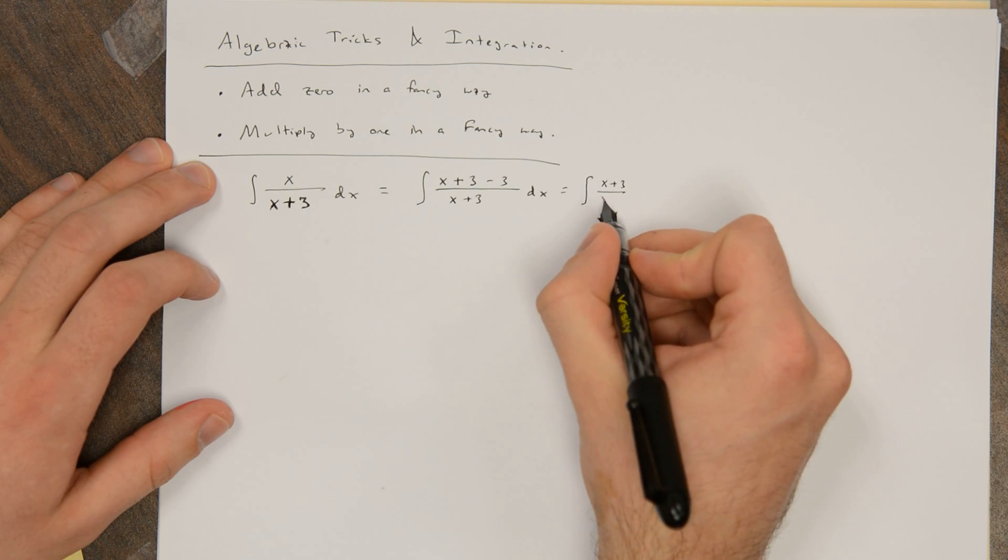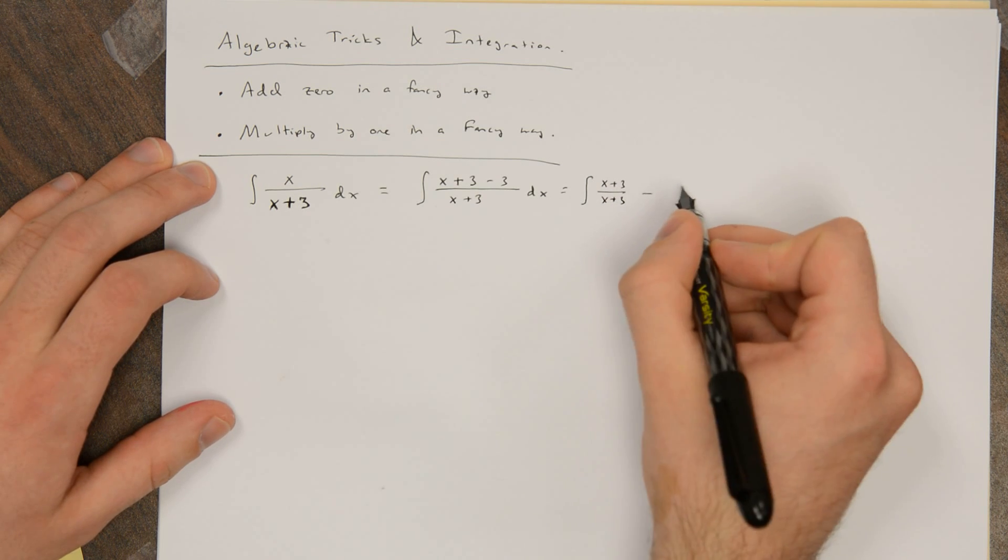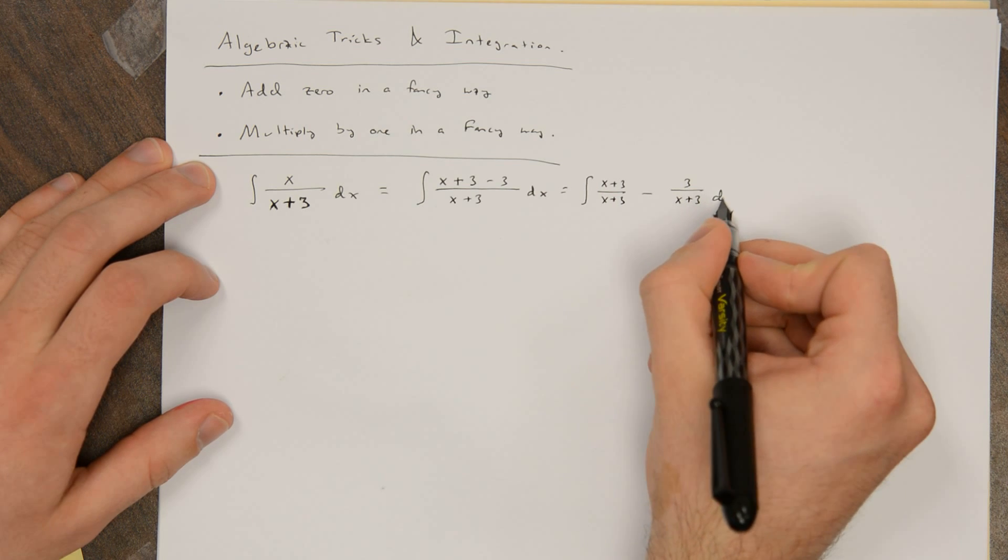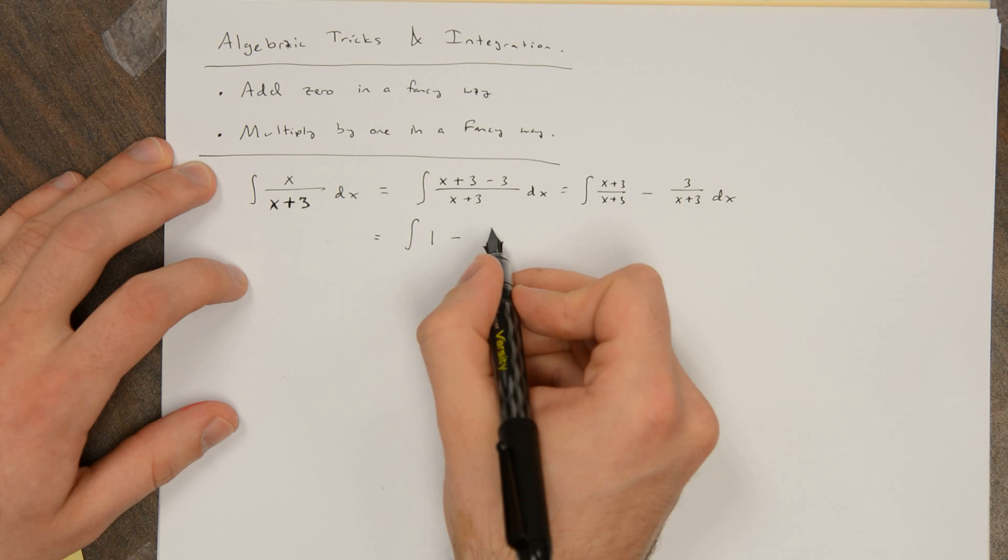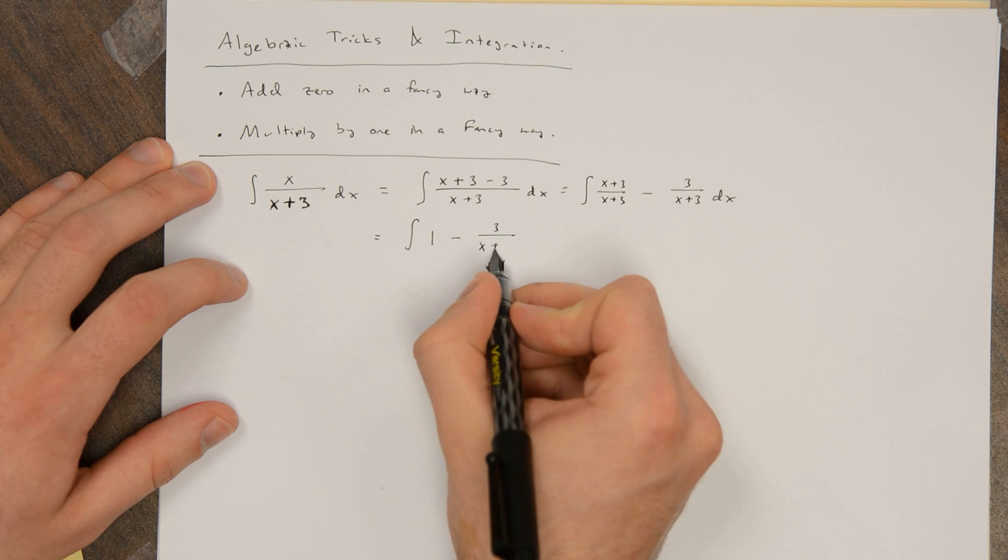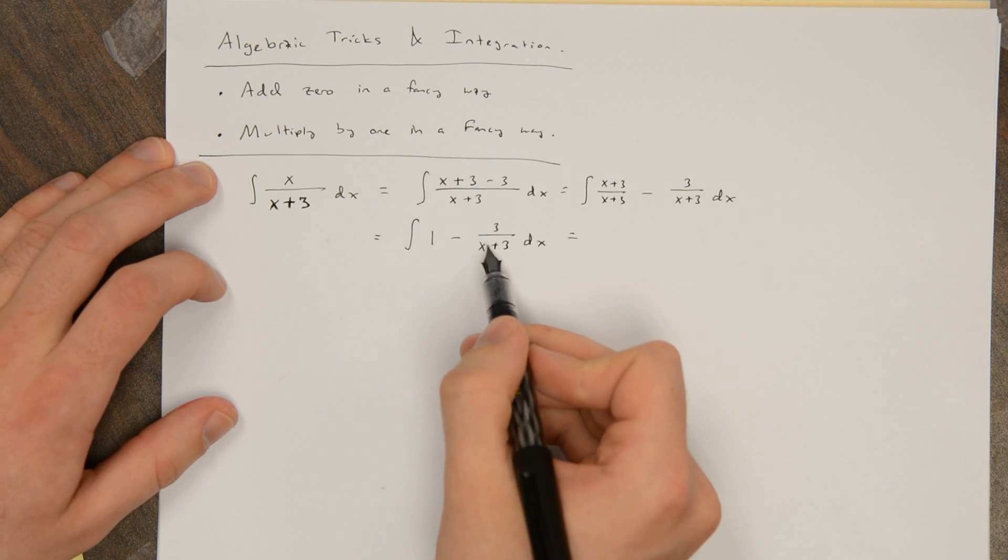And then I can break up this fraction into two parts. x plus 3 divided by x plus 3 minus 3 over x plus 3. So this is the integral of 1 minus 3 over x plus 3. And this is much easier to integrate, right?